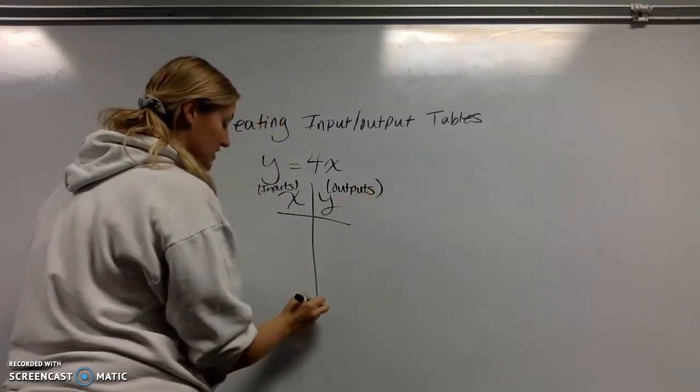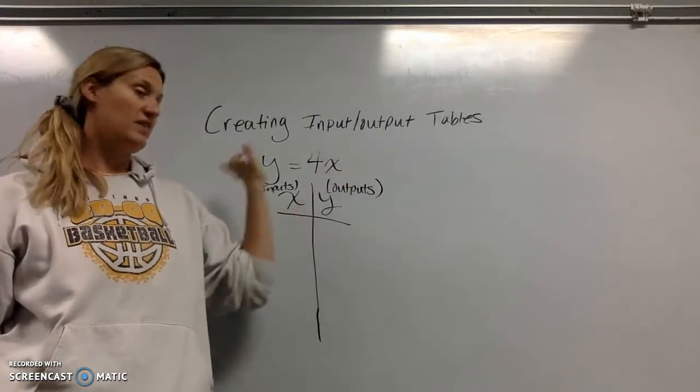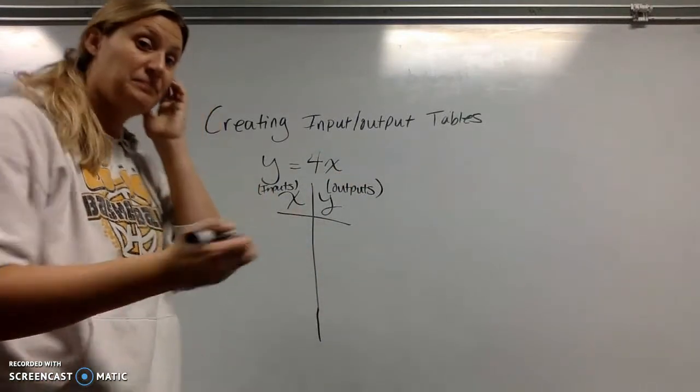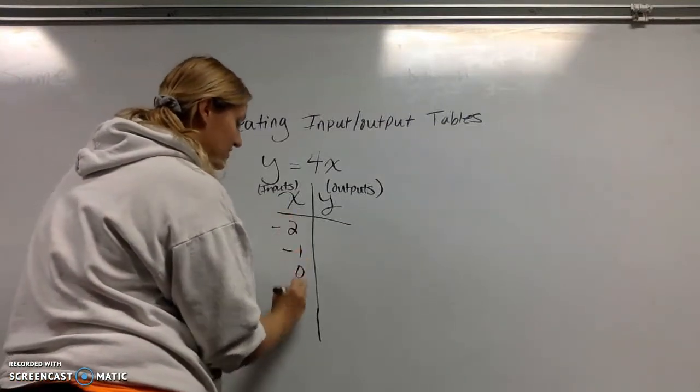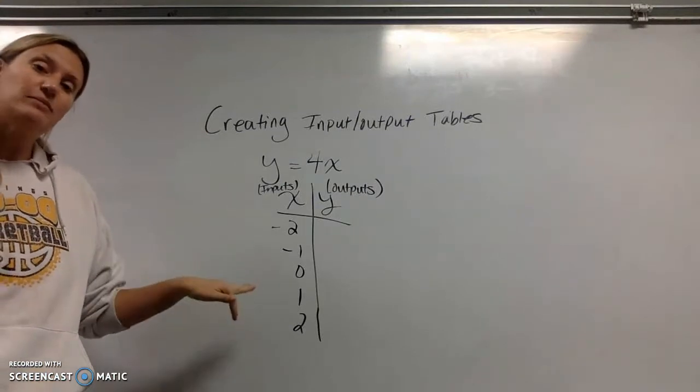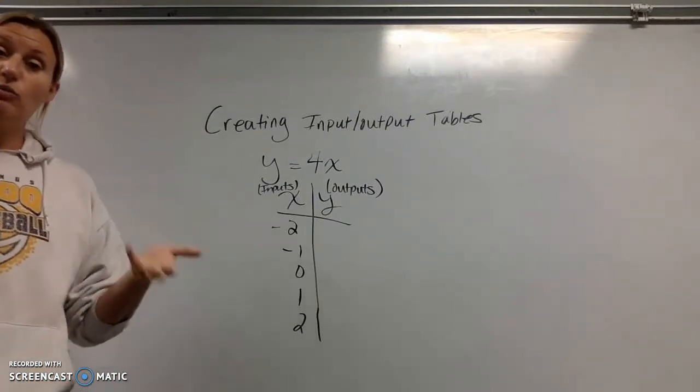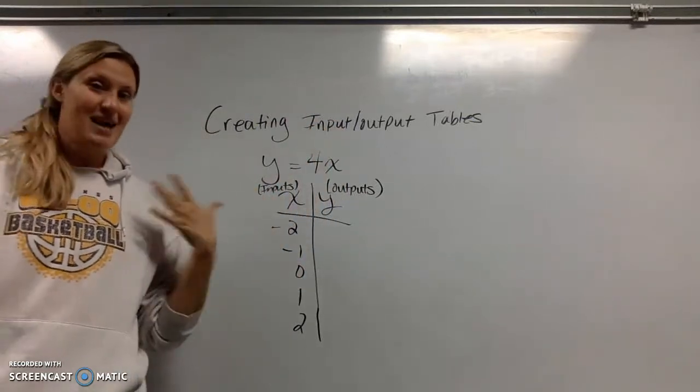Sometimes you will be given the input, so there'll be a list of numbers here for X that you're going to plug in and then get Y. Sometimes you have to create them. If you have to create, a lot of times a good idea is to look at your positives and your negatives. So you can see what does it look like with negative numbers, what does it look like with zero, and what does it look like with positive. And again, I pick numbers that are easy to calculate.